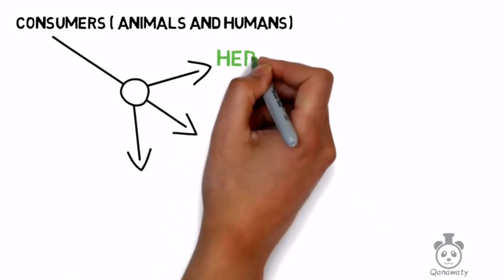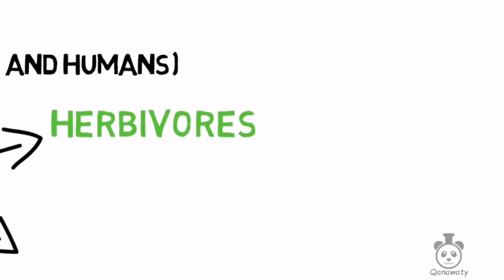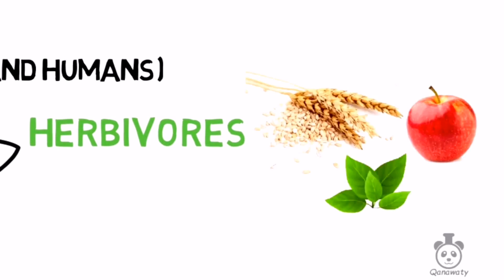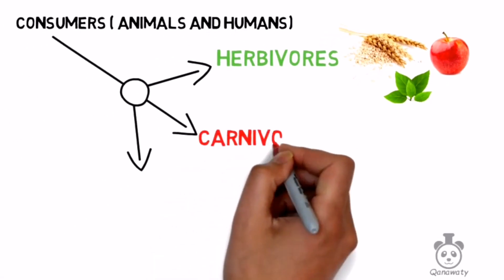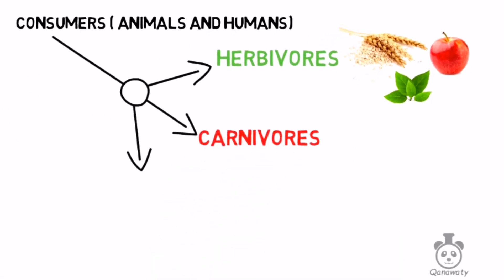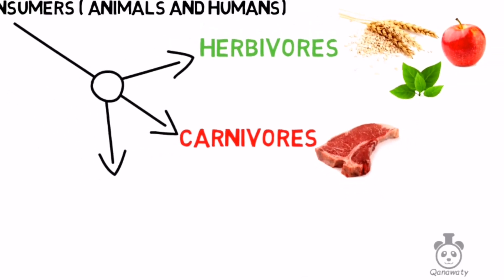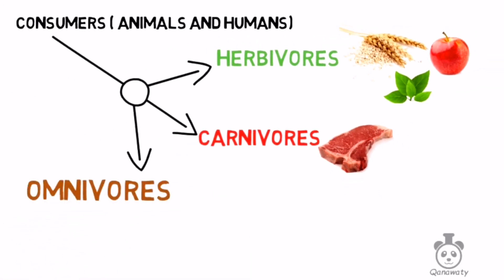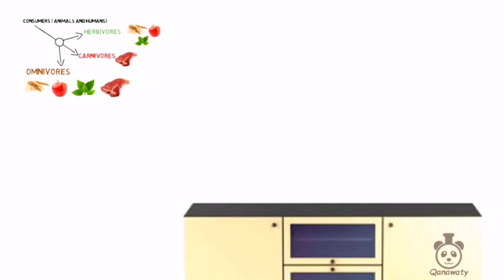Herbivores eat only food from plant sources, for example grains, fruits, or just green leaves. Carnivores eat only food from animal sources, for example meat. Omnivores eat everything — they eat food from both plant sources and animal sources.